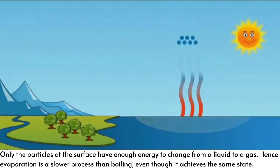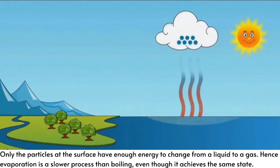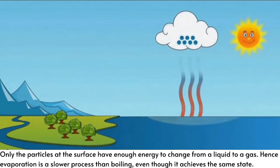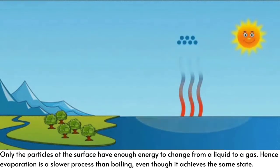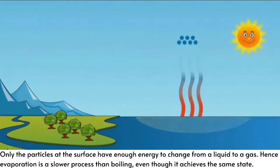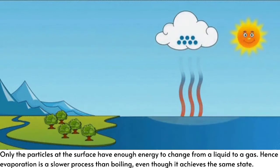Water standing in a pond, not being heated by anything other than the environment, can also turn into a gas — this is evaporation. Only the particles at the surface have enough energy to change from a liquid to a gas. Hence, evaporation is a slower process than boiling, even though it achieves the same state. Both are types of vaporization.